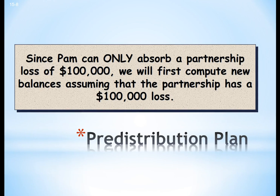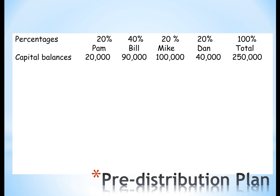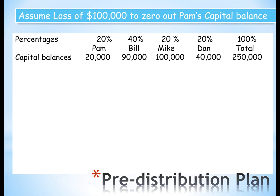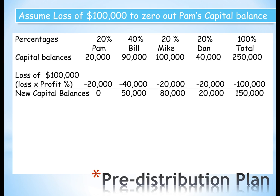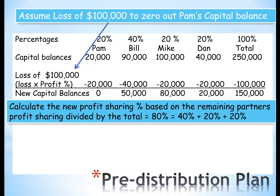Since Pam can only absorb a partnership loss of $100,000, we will first compute new balances assuming that the partnership has a $100,000 loss. We put the capital balances and their percentages across the top. Now, we're going to assume a loss of $100,000 and allocate that based on profit sharing. Based on the new capital balances, Pam is gone, and now all we have left is Bill, Mike, and Dan at 40-20-20. We're going to calculate profit sharing now based on the new remaining percentages, which equals 80%.